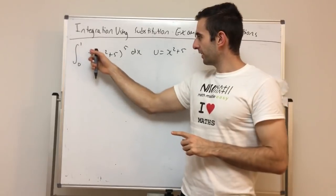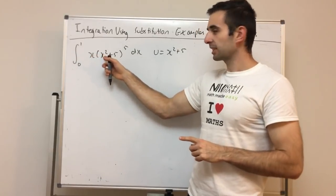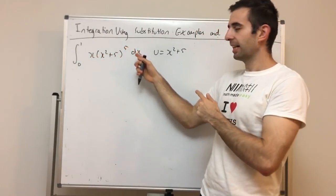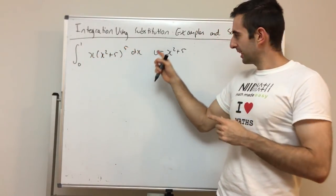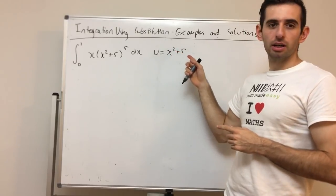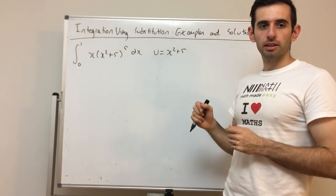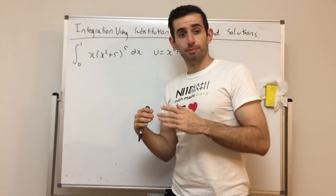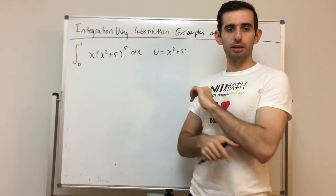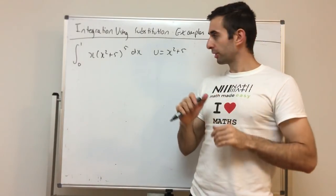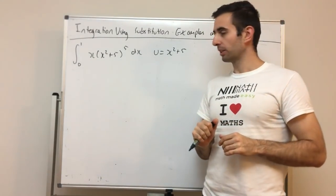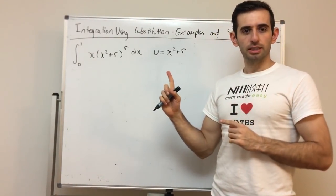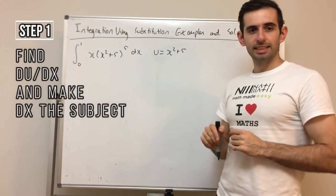Let's kick off with an example. The integral from 0 to 1 of x(x² + 5)⁵ dx, using the substitution u = x² + 5. Normally at beginner level they'll give you the substitution, but you can usually determine it yourself. Step one: let's find du/dx.